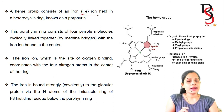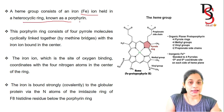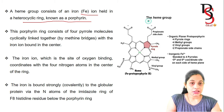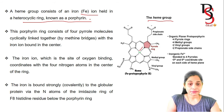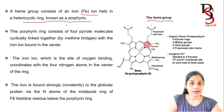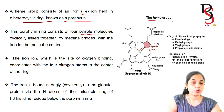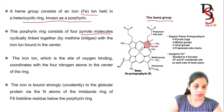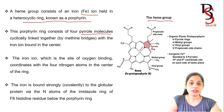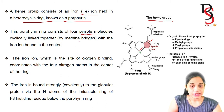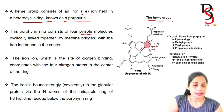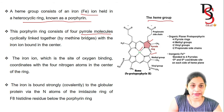A heme group consists of a central iron atom held in a heterocyclic ring known as porphyrin. The porphyrin ring consists of four pyrrole molecules linked together by a methyl bridge. At the center is the iron atom, which is the site of oxygen binding and coordinates with four nitrogen atoms.